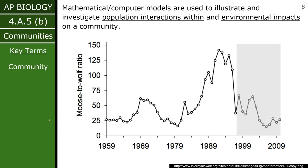We'll see a lot of ways to represent population interactions. Here you might see something like a moose-to-wolf ratio, meaning that if you are higher up — around 1990 or so — you have more moose per wolf. Whereas if you are lower, you have fewer moose per wolf. Even at its low point it's still a ratio of 25 to one, but much smaller than when it's around 150. This is just one way to illustrate different population dynamics and how they change.